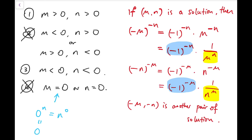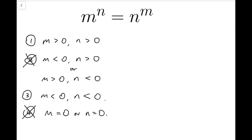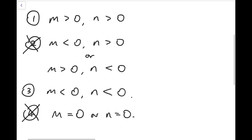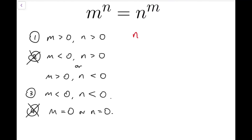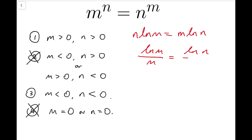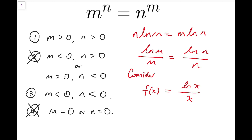It remains to solve the first case, which is that m and n are both positive. From the fact that m to the power n equals n to the power m, I can take the natural log on both sides and say that n times natural log of m equals m times natural log of n. Rearranging, natural log of m over m equals natural log of n over n. From this, it's very tempting to consider a function f(x) = natural log of x over x and see whether we can find two values of x such that it gives the same output.